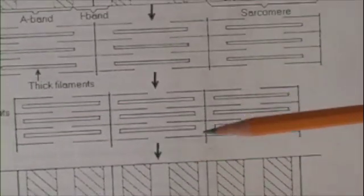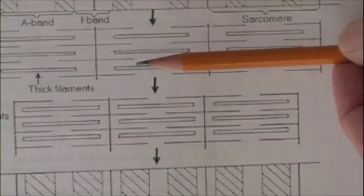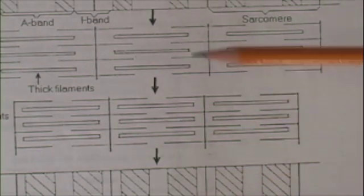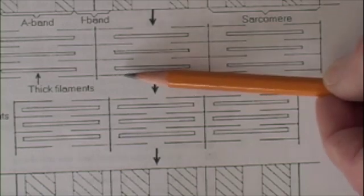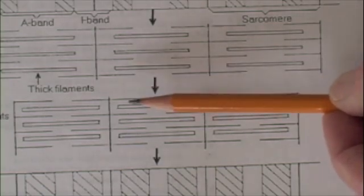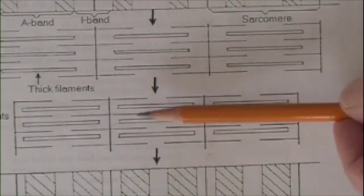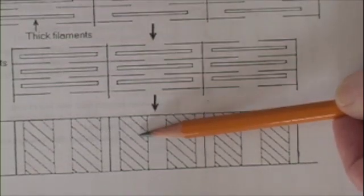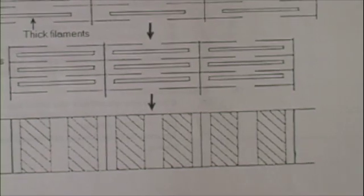Now it's easy to imagine why. Remember, a muscle does one thing — it shortens. And when it shortens, the thick and thin filaments slide across one another. So as the muscle contracts, there's greater overlap between thick and thin filaments, and the overlap is what appears to be the dark band. Not really a very complicated idea, in essence.